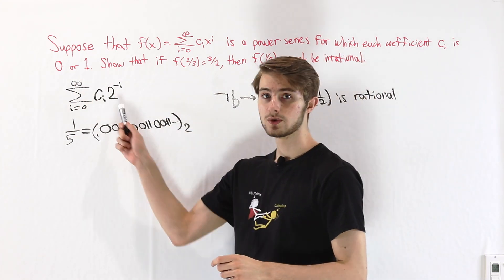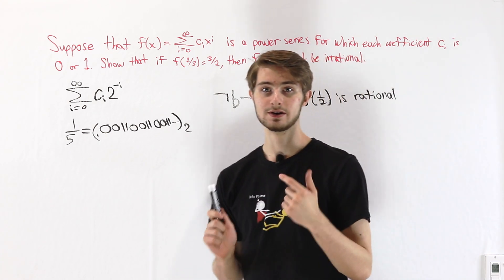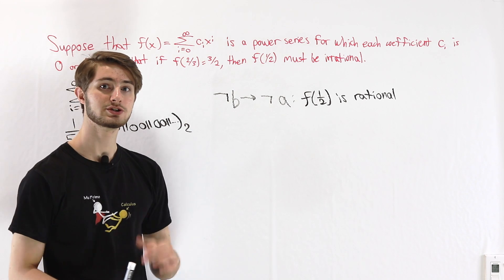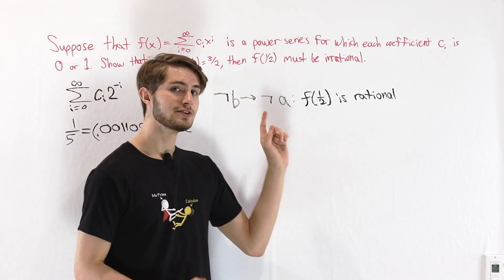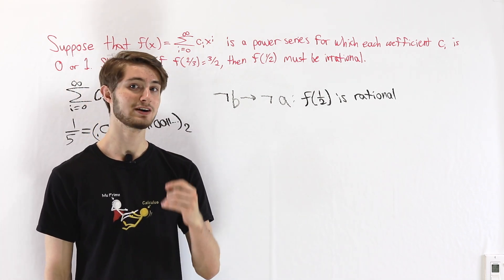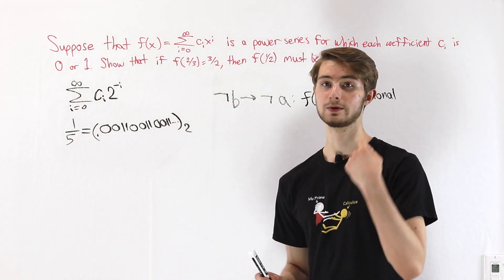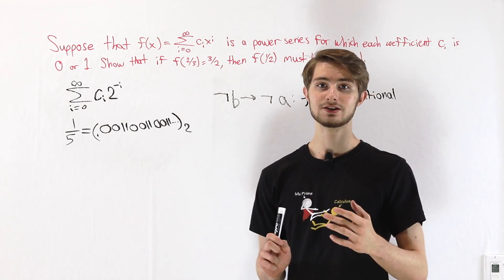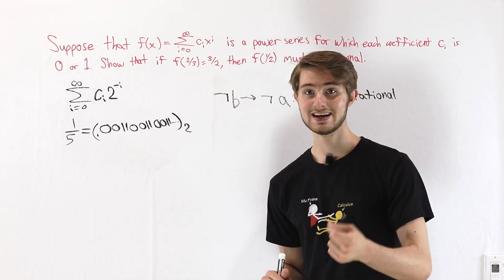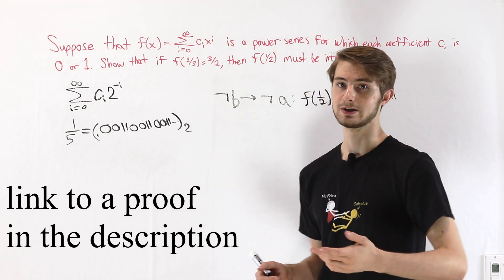That means f(1/2) is going to be the binary expansion of some number. But we know it's the expansion of a rational number. If a number is rational, that gives us an important piece of information about its binary expansion: we know that expansion must be repeating. That's a little easier to realize if we think about the decimal version — if a number is rational, it must have a repeating decimal expansion, including 000... repeating as a case.